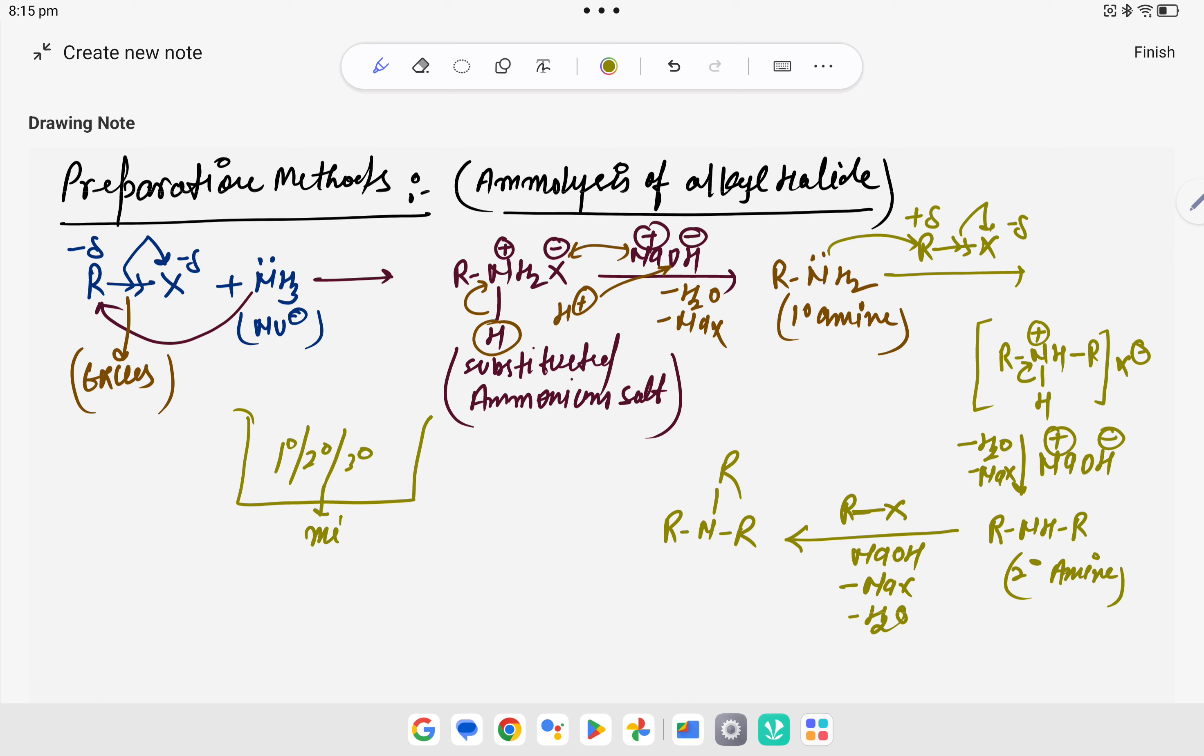Let's talk about the reactivity of alkyl halide. So R-I is more reactive than R-Br and then R-Cl. So this is the reactivity order of alkyl halide or haloalkane you can say. So first preparation method is completed children.